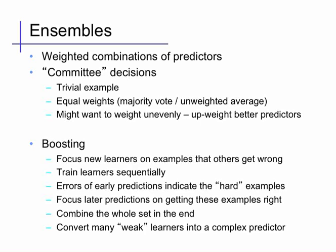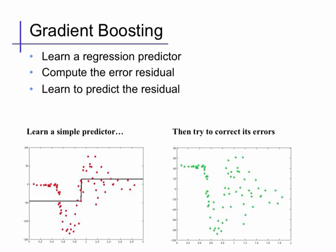Initial learners tend to be very simple, and then the weighted combination can grow more and more complex as learners are added. Gradient boosting is an instantiation of this idea for regression. The idea is to repeatedly follow this procedure.